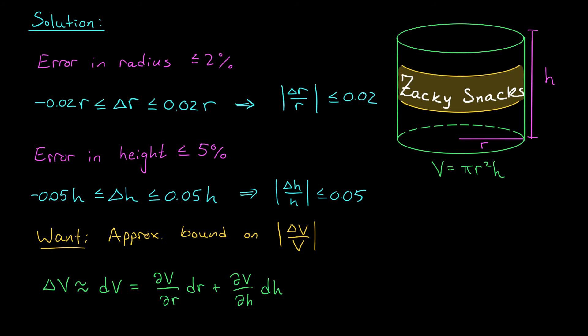But check it out. We can compute these partial derivatives using our volume formula. The partial of V with respect to r is 2πrh, we multiply by dr, and then the partial derivative of V with respect to h is πr², and we multiply by dh. This gives us an approximation for the change in volume. But of course, we're interested in finding a bound for this expression, the absolute value of delta V over V. So our next step is to divide both sides of this expression by V and take the absolute value.